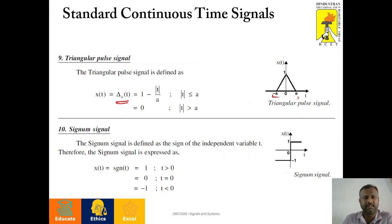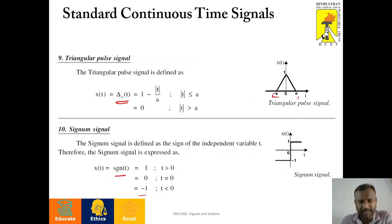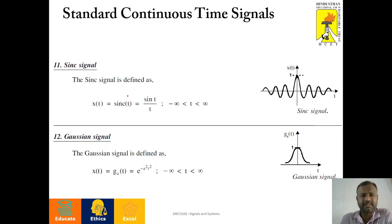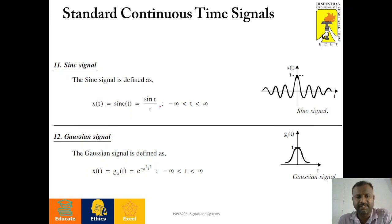The tenth signal is the signum signal. Signum of t equals 1 for t greater than 0, signum of t equals minus 1 for t less than 0, and it is 0 at t equals 0. The graphical representation of the signum function is given accordingly. Next is the sinc signal, which is defined as sin(t) divided by t over the range from minus infinity to plus infinity.